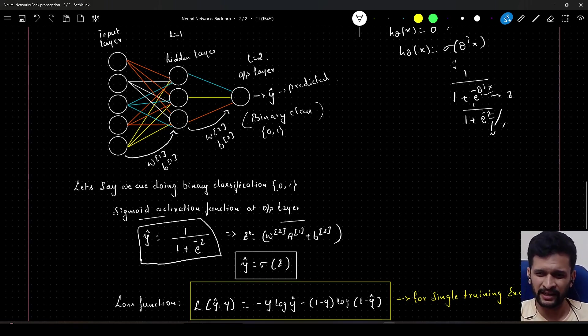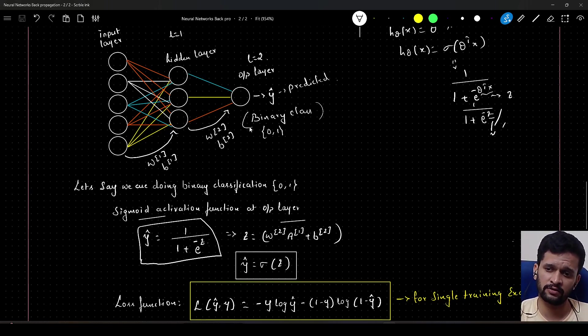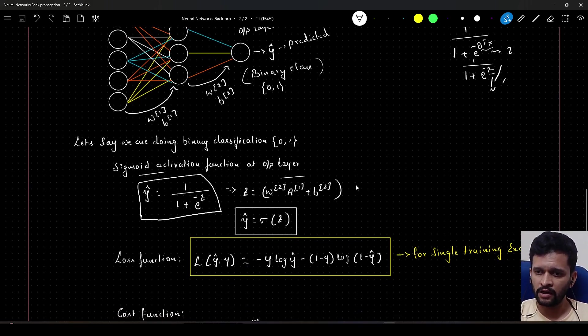These are the weights associated with layer 2. This is the activation of layer 1, the previous layer, plus b of 2 which is the bias associated with this output layer. Our final prediction will be after we have this z, we will apply the sigmoid and this will be the final computation.